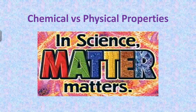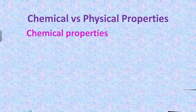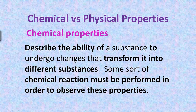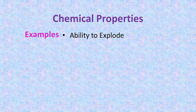Okay chemistry students, today you're going to learn about chemical and physical properties. Chemical properties describe the ability of a substance to undergo changes that transform it into a different substance. Some sort of chemical reaction must be performed in order to observe these properties. Some examples: the ability to explode, flammability.